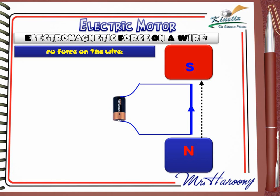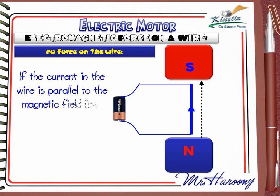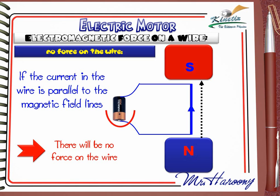It is clear from the diagram that the current and the magnetic field are parallel to each other. In this case, the wire will not move. If the current in the wire is parallel to the magnetic field lines, there will be no force on the wire. Even if the current is reversed, the wire will not move, as the current and the magnetic field are still parallel to each other.